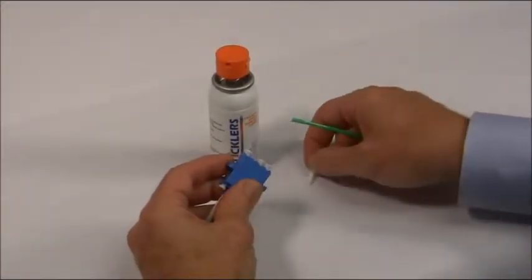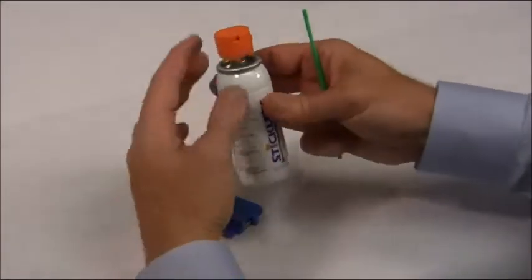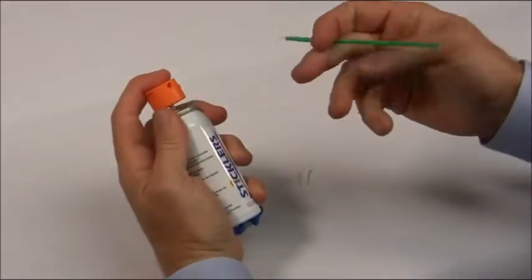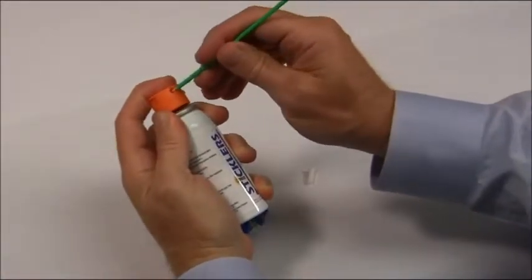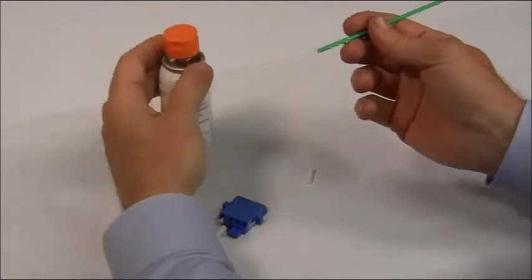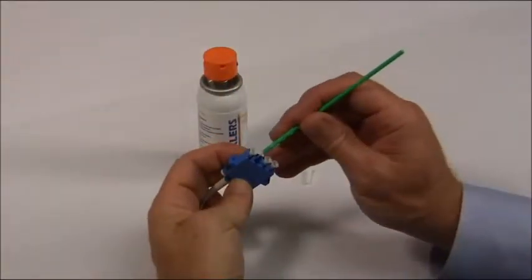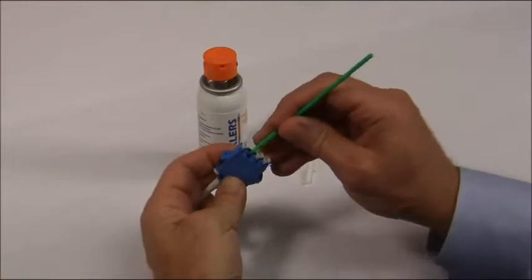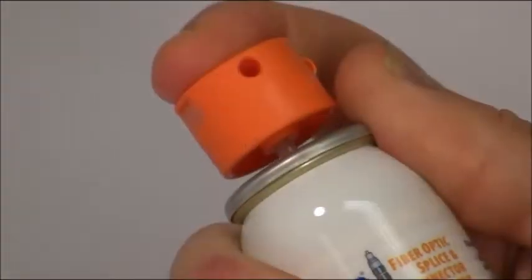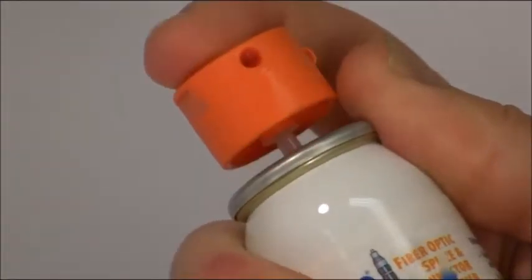First, moisten the stick with Stickler's Fiber Optic Splice and Connector Cleaner. The cleaner speeds removal of oils and also draws down static charges on the connector's ferrule and face and alignment sleeve. This minimizes possible recontamination from airborne particulate. You only need to apply a small amount of fluid. Less is more.